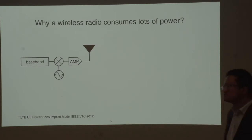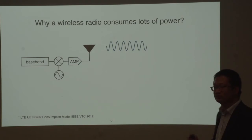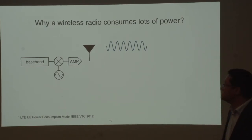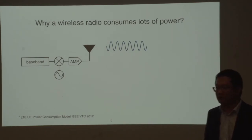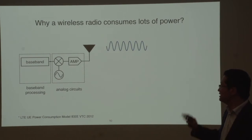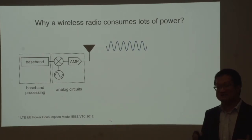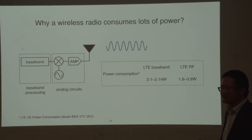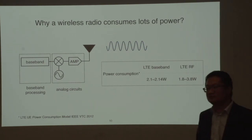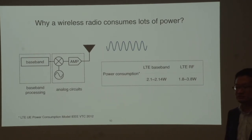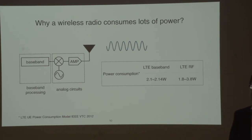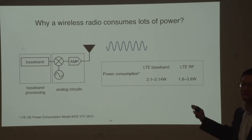When the radio produces a wireless signal, it involves two power-hungry components: baseband processing and analog RF circuits. Both are very expensive in terms of power. In LTE, both the baseband and the RF circuits consume roughly two watts of power. Over the past 20 years, many engineers tried to design novel circuits such as amplifiers, mixers, and processors to reduce radio power consumption. Unfortunately, right now the power consumption of wireless radios is still on the order of 10 to 20 milliwatts — much larger than our target.